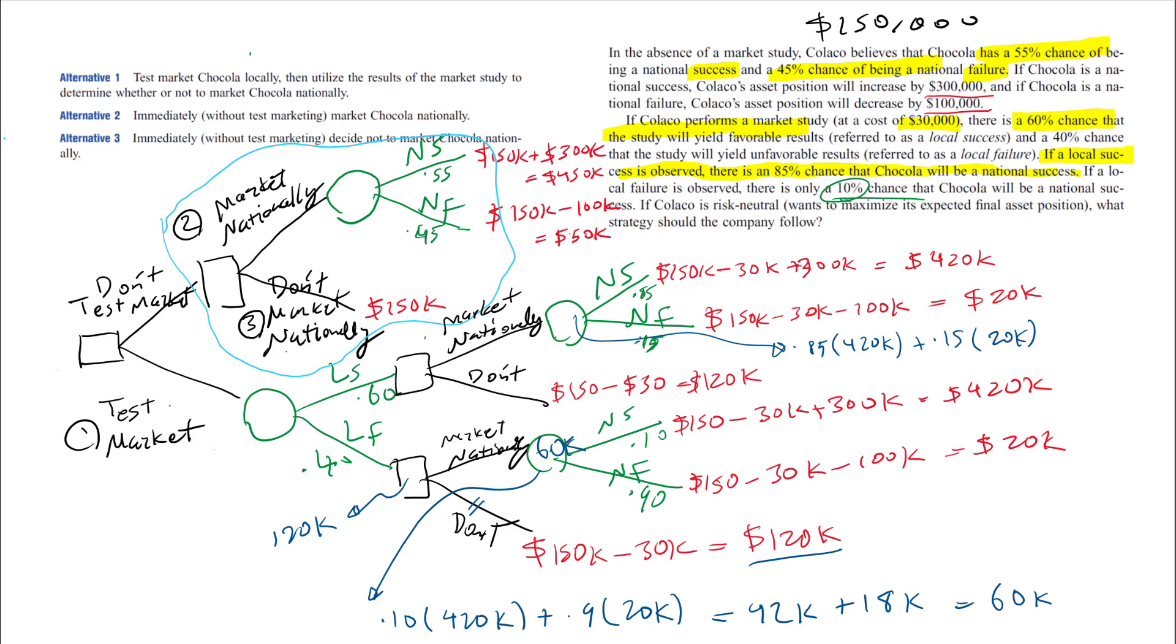Which is 360K. Now I'm choosing between 360 and 120. Of course, this one is larger. I'm going to mark that, so the value of this node became 360K.